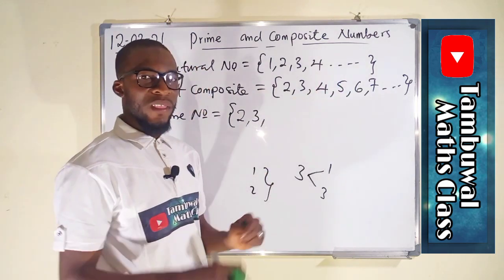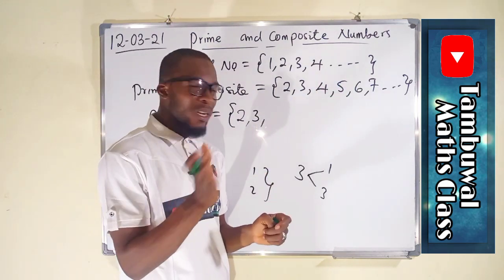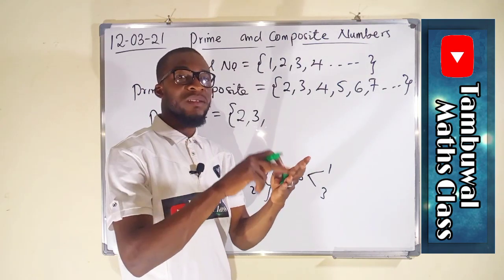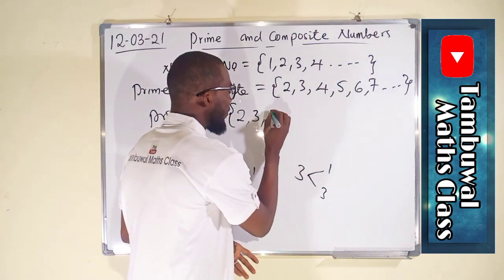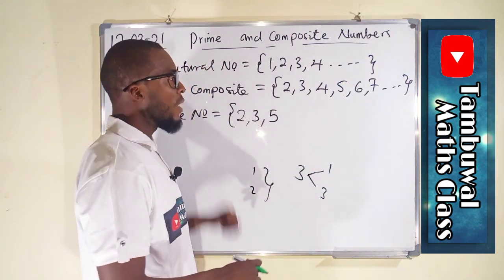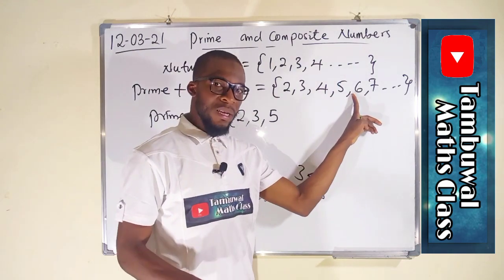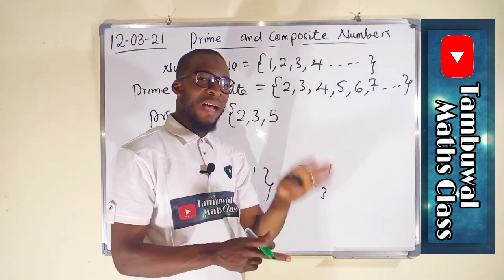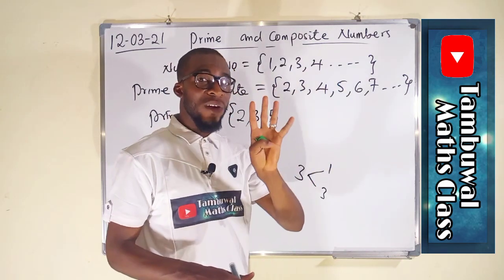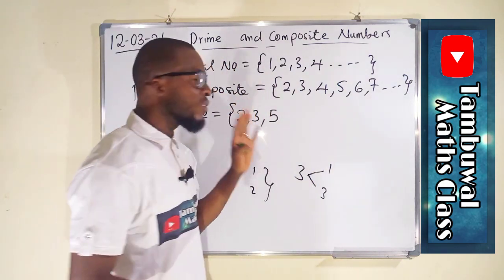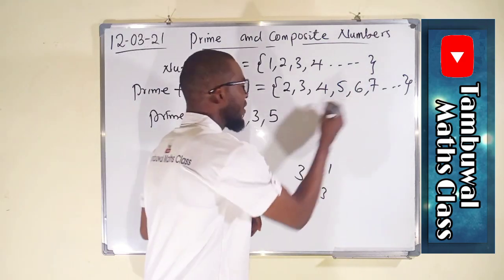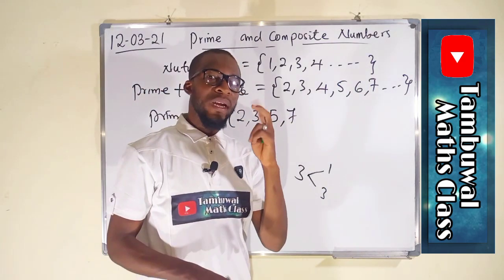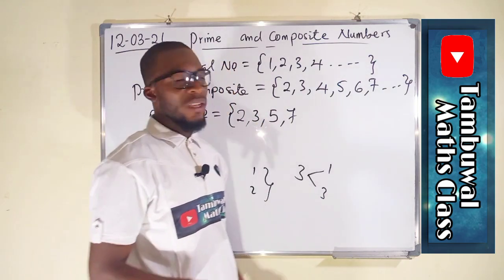Moving on, we have five. There is no other number that can go into five without remainder except one and itself, so five is also a prime number. Moving on, we have six. Six has one, two, three, and six as factors — so it has four factors, so it is not considered a prime. But we have seven. Seven is a prime because seven has only one and seven as its factors.